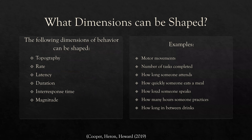So what dimensions can be shaped? Almost anything — that's the great thing about shaping. We can shape a behavior we already want to see and just want to increase intensity, length, or how often it happens. We can shape topography — how it looks — rate, how often it occurs, latency, duration, response time, even magnitude. You can shape motor movements, number of tasks completed, attending, how quickly someone eats, how loud someone speaks, how many hours someone practices, how long in between drinks. Don't limit yourself with shaping — it can be used for so many things.